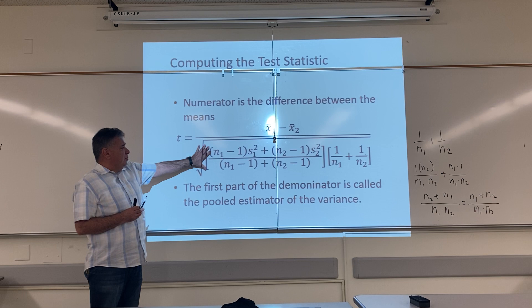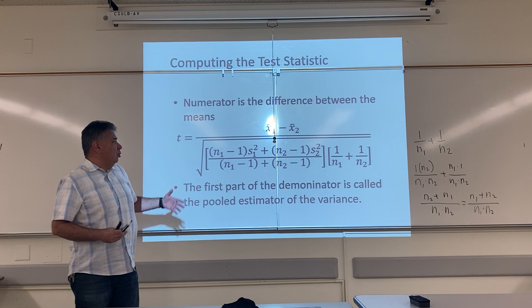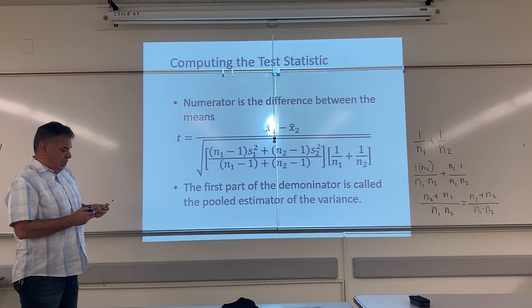This first part of the denominator is called the pooled estimator of the variance. Pooled means you are combining or adding together — so we're adding the variances. Let me show you one more slide.